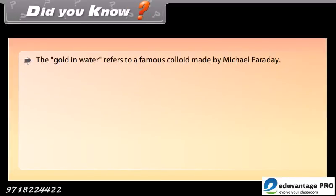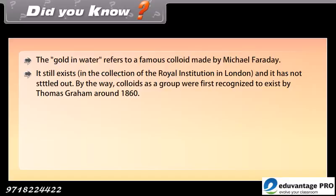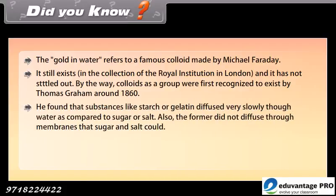Did you know? The 'gold in water' refers to a famous colloid made by Michael Faraday. It still exists in the collection of the Royal Institution in London and has not settled out. Colloids as a group were first recognized to exist by Thomas Graham around 1860. He found that substances like starch or gelatin diffused very slowly in water compared to sugar or salt.